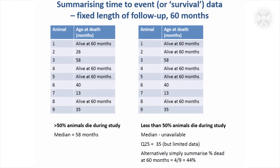You need to be careful how you summarise this data. Quite alarmingly, people often treat the living animals as missing and just summarise the events that have happened. But hopefully you can see that's completely biased, because if an animal is still alive it's clear they're going to have a value of greater than 60 here. It's not even fair to just put in a value of 60, because you know it's going to be 60 or more. So that's inappropriate as well.